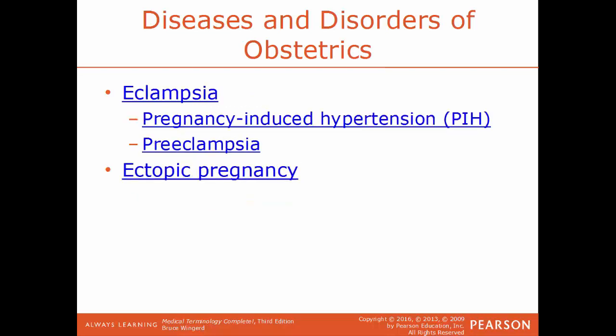Eclampsia, also called PIH or pregnancy-induced hypertension, is a life-threatening complication of pregnancy where the woman has developed very high blood pressure, often leading to convulsions and followed by a coma. This puts both the mother and the baby at risk. It's often preceded by preeclampsia, where a pregnant woman is diagnosed with high blood pressure and high amounts of protein in her urine. If preeclampsia isn't detected and corrected early enough, it can easily lead to eclampsia.